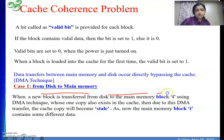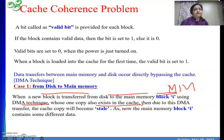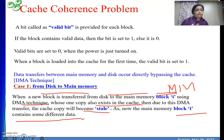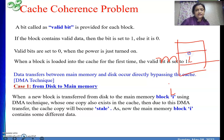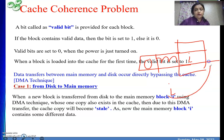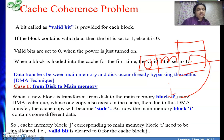When a new block is transferred from disk to main memory into block i using DMA, and one copy of that block also exists in cache, the cache copy becomes stale. The main memory block i now contains different data. To maintain consistency and correctness, we set the valid bit of block i's cache copy to zero. Wherever block i is present in cache — say at position m — that block's valid bit is set to zero, causing a miss, after which the correct block will be fetched.